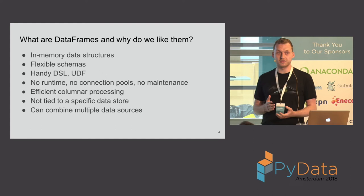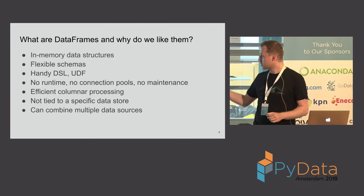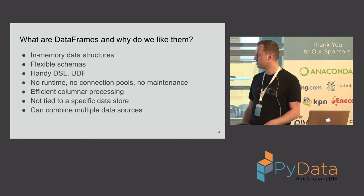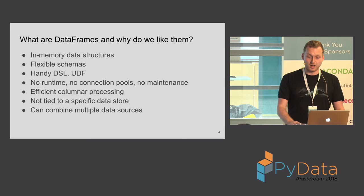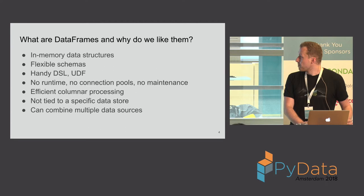All the data is stored per column, which offers very efficient column processing, which we'll get to in a minute. It's not tied to a specific data store, meaning that Pandas doesn't really care where your data is because it loads it all into memory into its own format. You can also combine multiple data sources — you can do that in SQL with, for example, foreign data wrappers in Postgres, but in Pandas it's a lot more extensible because you can have some data from CSV, some from JSON, some from a database, and combine them together.